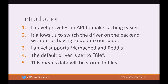So introduction. Laravel provides an API to make caching easier. It allows us to switch the driver on the backend without us having to update our code, which is extremely useful. Laravel supports Memcached and Redis right out of the box. The default driver is set to file, so when you install Laravel — and I'm talking about Laravel 5.3 here — all your cached data is going to be stored as files.